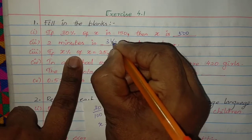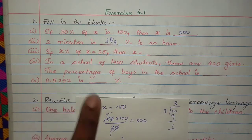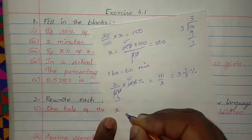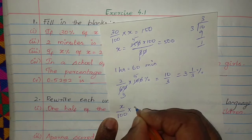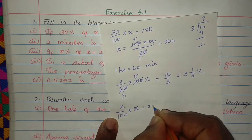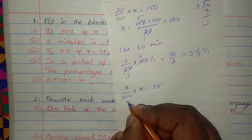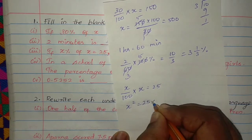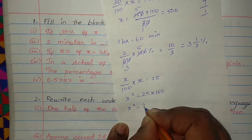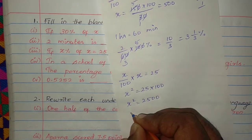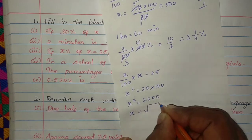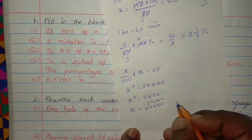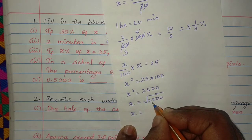If x% of x is 25, then x is: x% of x equals x by 100 into x equals 25. So x squared equals 25 into 100, which gives x squared equals 2500. Therefore x equals square root of 2500, so x equals 50.